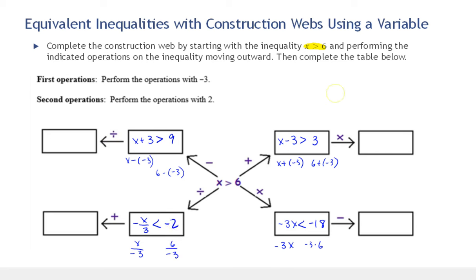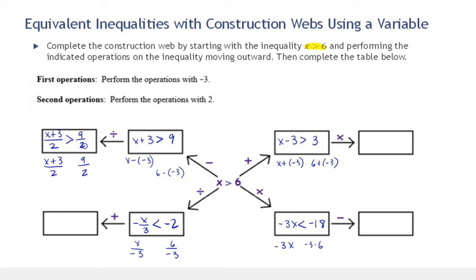Now let's move to the second operations. We're asked to perform these operations with 2. Since 2 is positive, we don't have to worry about reversing any of the directions. On the left-hand side we are dividing: x plus 3 divided by 2 on the left, and 9 over 2 on the right. There's nothing to simplify, so the inequality is x plus 3 over 2 is greater than 9 halves.